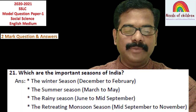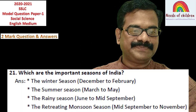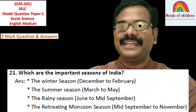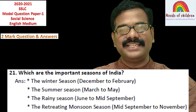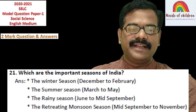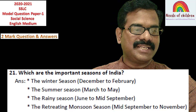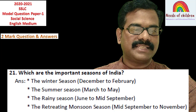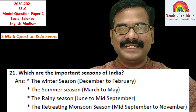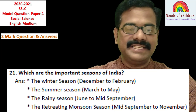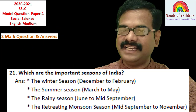Question number 21: Which are the important seasons in India? This question is from Geography, Chapter Number 3 — Indian Climate. The answer is: the winter season, the summer season, the rainy season, and the retreating monsoon season.